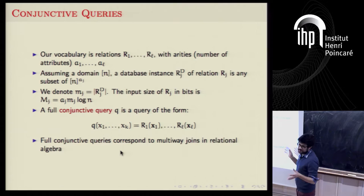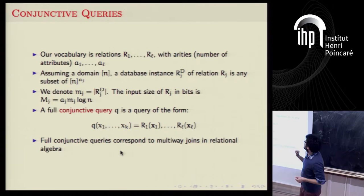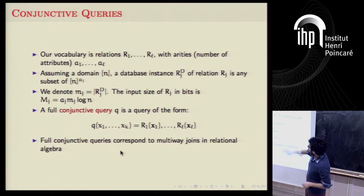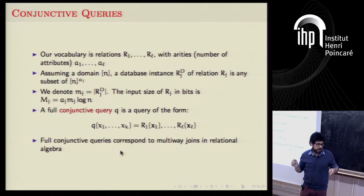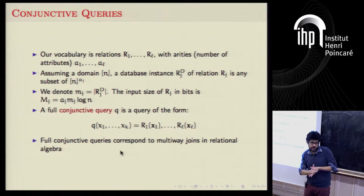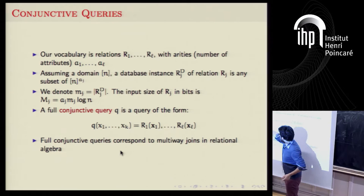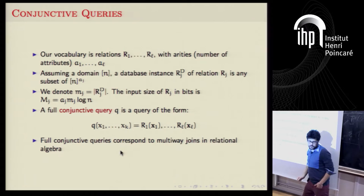Our queries are what we call in databases conjunctive queries. We start with a vocabulary — just relations. A relation R_i has arity a_i, which is the number of attributes it has. We assume a domain N from which we grab values. A database instance is a subset: for each of the a_j entries, you pick one value from 1 to N. We denote by m_j the size of the relation — the number of tuples — which differs from the number of bits needed to represent the relation, which is a_j times m_j times log N.